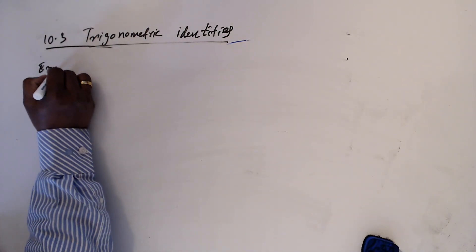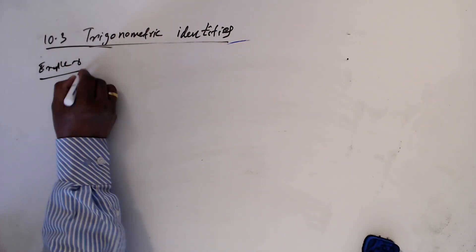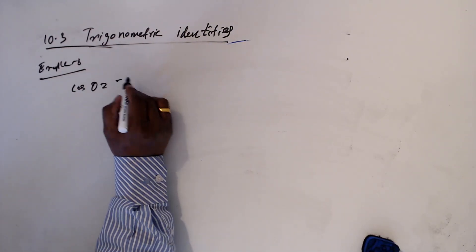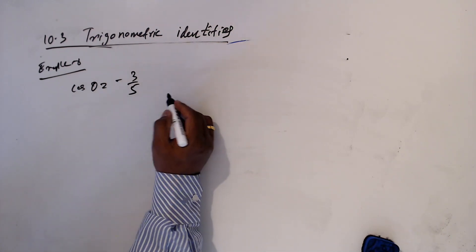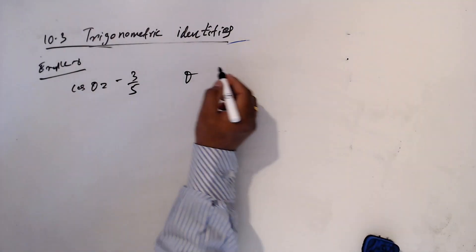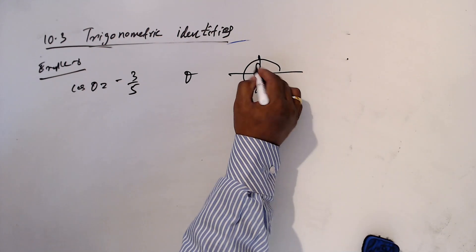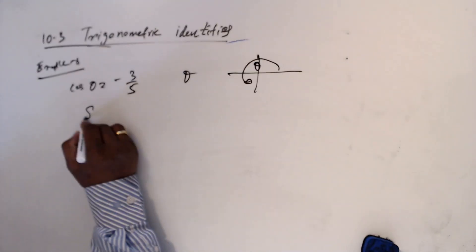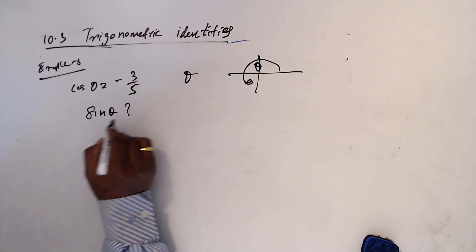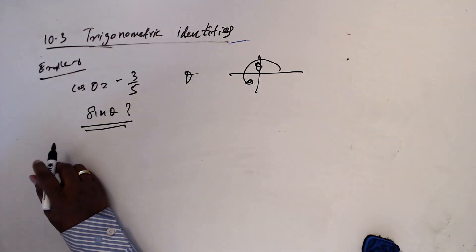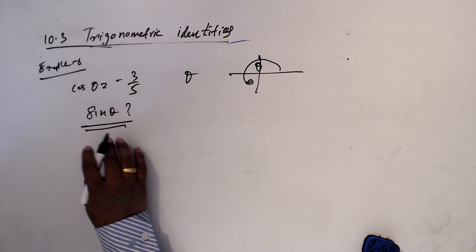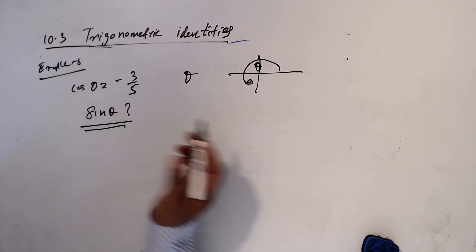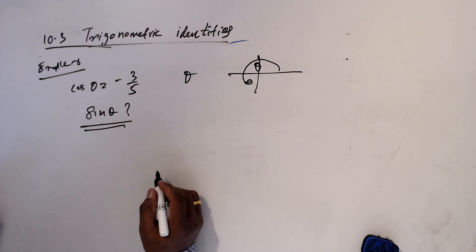When you look at example 8, cos theta is given minus 3 over 5. Theta is reflex, means somewhere here, this theta angle. Now we want to find sine theta. The identities can also be used to find this kind of angles, so we'll discuss how to do it.